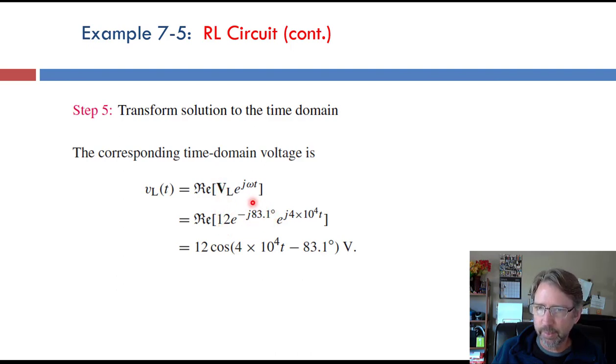Here's our answer in phasor form. And the upshot of doing all of that is that we take the negative 83 degrees and we put it right here in the phase. We put omega t and we take the 12 and put it right here.